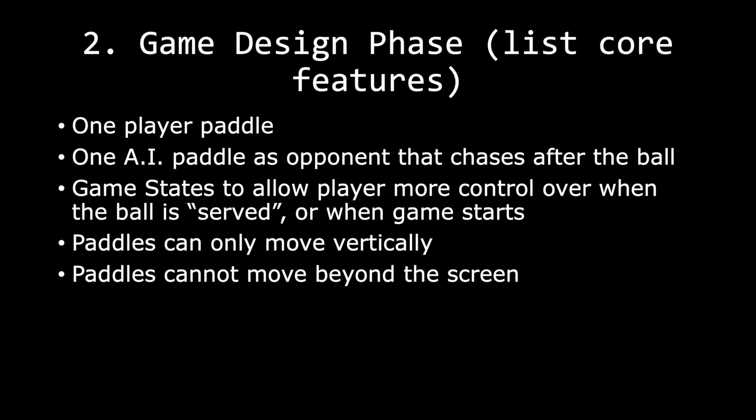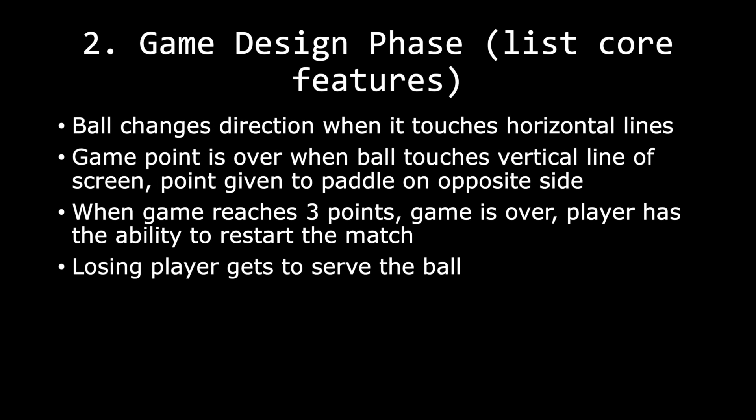I like to list out the core features. So: one player paddle, one AI paddle as opponent that chases the ball, game states to allow the player control over when the ball is served, paddles can move vertically but not horizontally, paddles cannot move beyond the screen, the ball changes direction when it touches horizontal lines, game point is over when ball touches a vertical line with the point given to the paddle on the opposite side. The losing player gets to serve the ball, and when the game reaches three points, the game is over. The player also has the ability to restart the match.